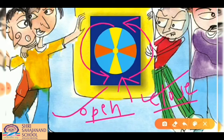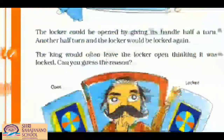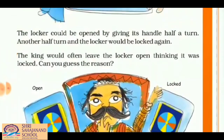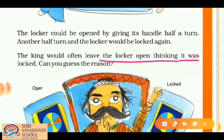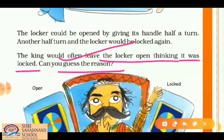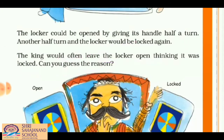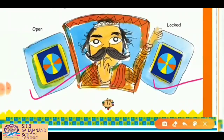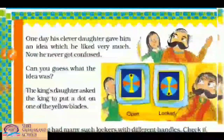So the king would often leave the locker open thinking it was locked. There is no identification in this locker to show which condition is locked and which is unlocked. Looking at the pictures of the open and locked locker, both look the same, so everyone — including the king — was confused.